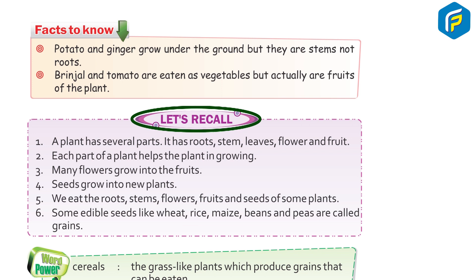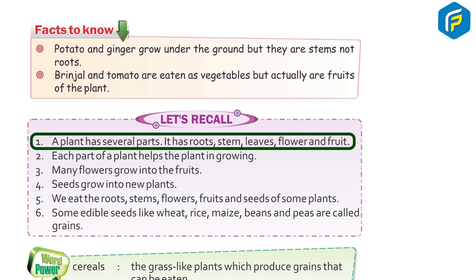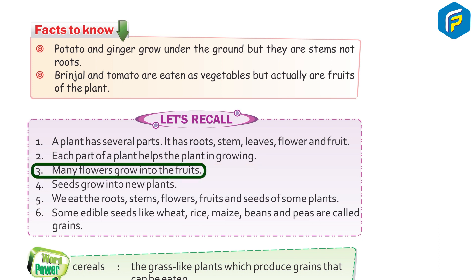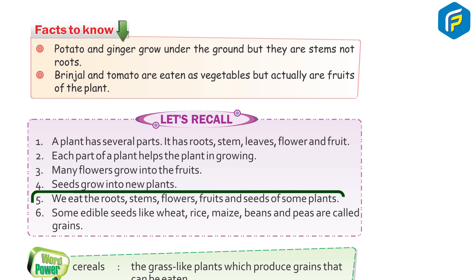Let's Recall: 1. A plant has several parts — roots, stems, leaves, flowers and fruit. 2. Each part of a plant helps the plant in growing. 3. Many flowers grow into fruits. 4. Seeds grow into new plants. 5. We eat the roots, stems, flowers, fruits and seeds of some plants.